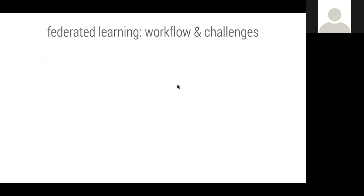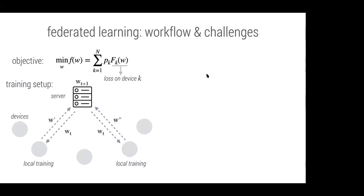Let's start with a working definition of federated learning. The goal is to train a machine learning model across a network of devices. The objective is something like an empirical risk minimization objective where you have a sum of n loss functions — one for each device — and the goal is to fit this objective to data distributed across a bunch of devices. At a high level, training involves a central server that aggregates updates iteratively: at each round, the current model w_t is sent to a subset of devices.